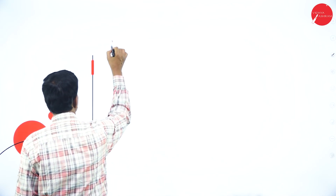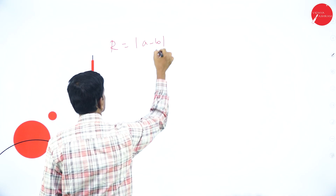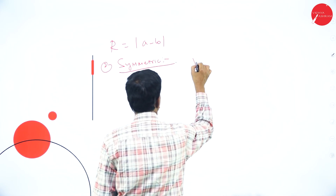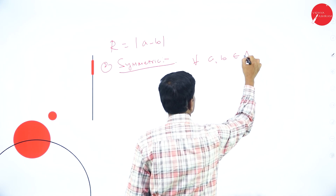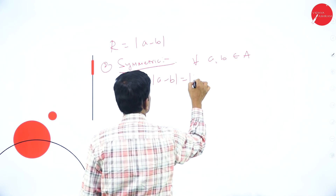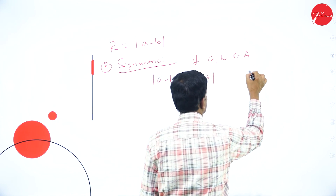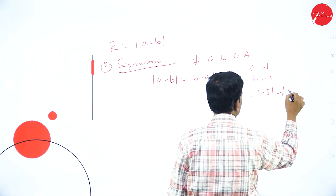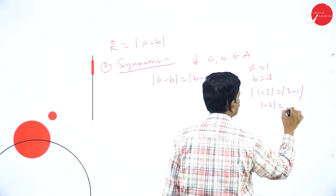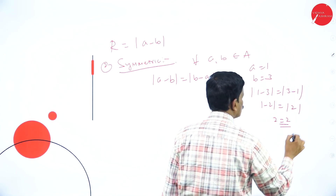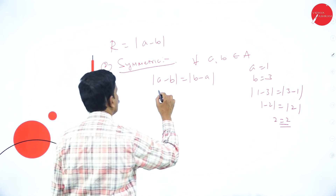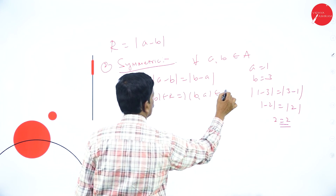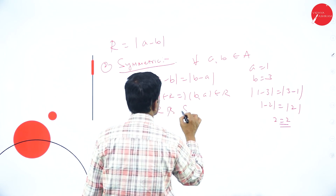Second, verify symmetric. For all (a, b) belonging to set A, |a − b| is also equal to |b − a|. For example, let a = 1 and b = 3: |1 − 3| = |−2| = 2, and |3 − 1| = 2. So |a − b| = |b − a|, meaning (a, b) belongs to R implies (b, a) also belongs to R. Therefore R is symmetric.